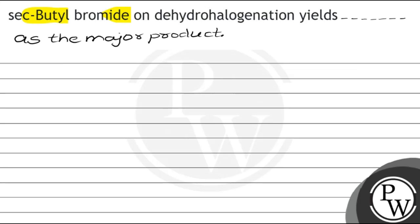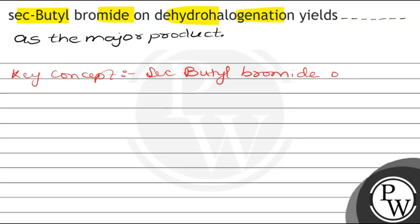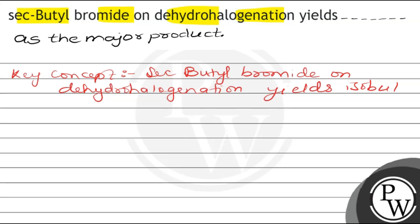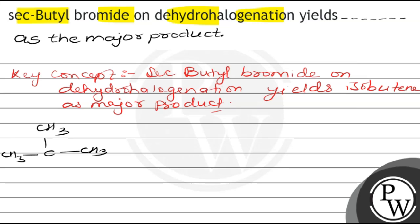In this lecture, the question is: sec-butyl bromide on dehydrohalogenation gives what as the major product? The key concept of this question is that sec-butyl bromide on dehydrohalogenation gives isobutene as the major product.